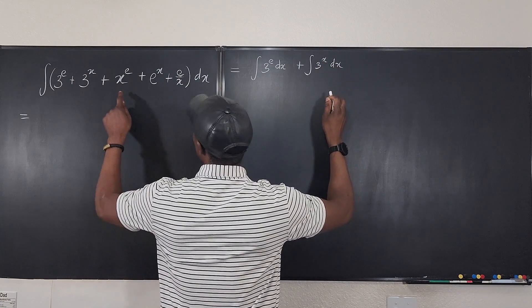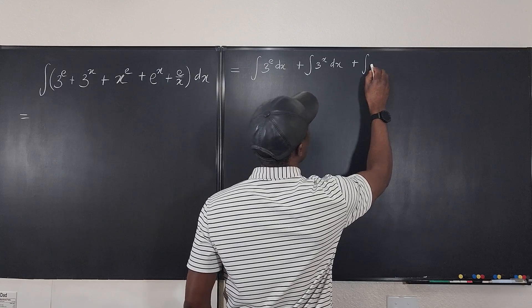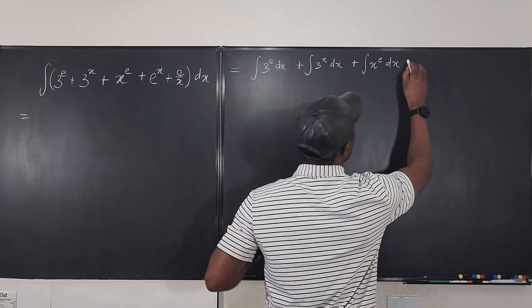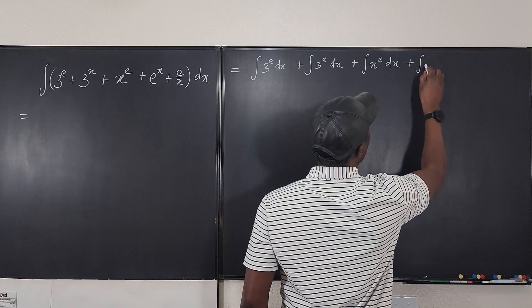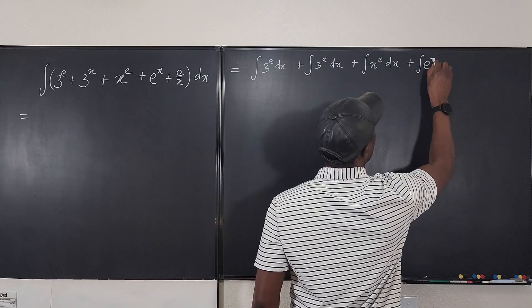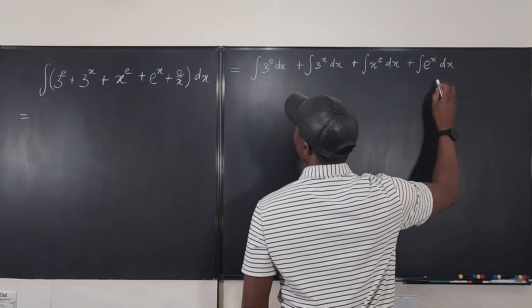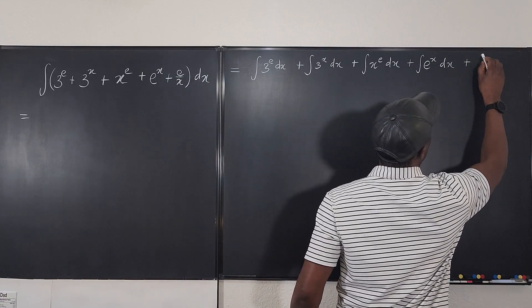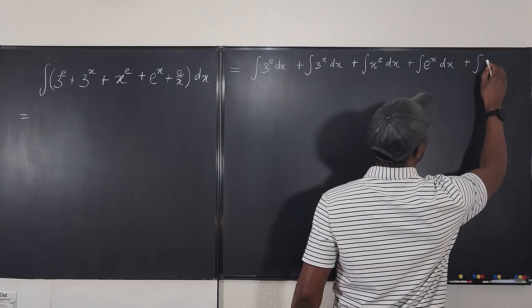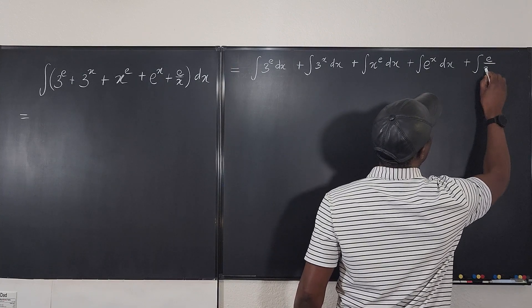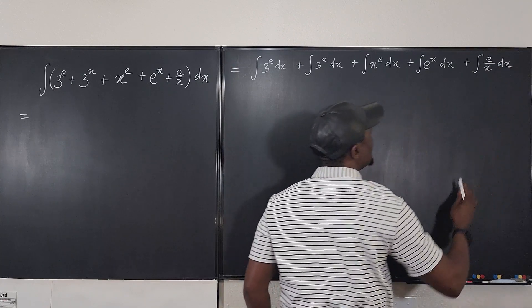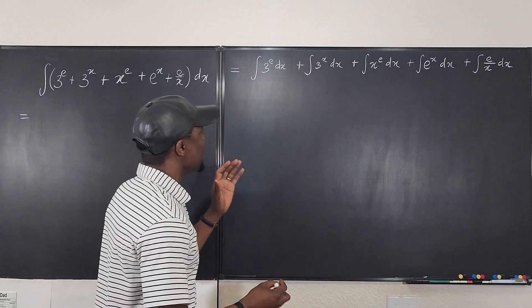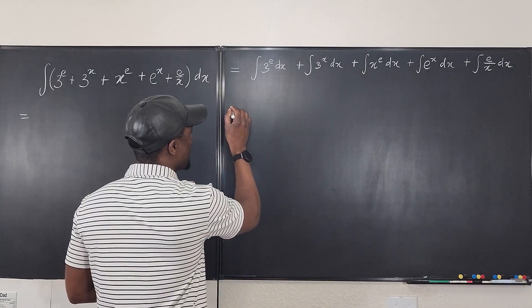We have plus the integral of x to the e dx. Then we have the integral of e to the x dx. And then we have the integral of e over x dx. Now, all of these are very simple expressions. So now let's take them one by one.